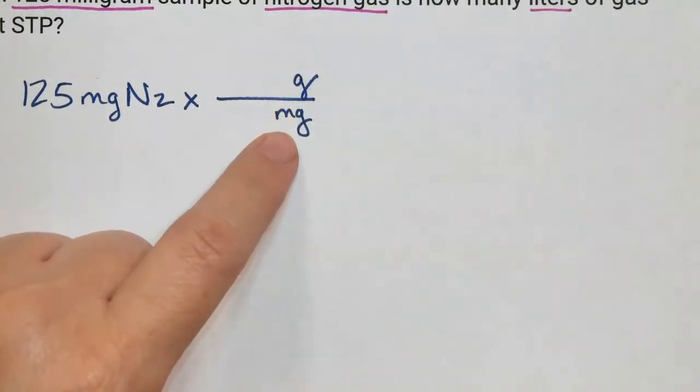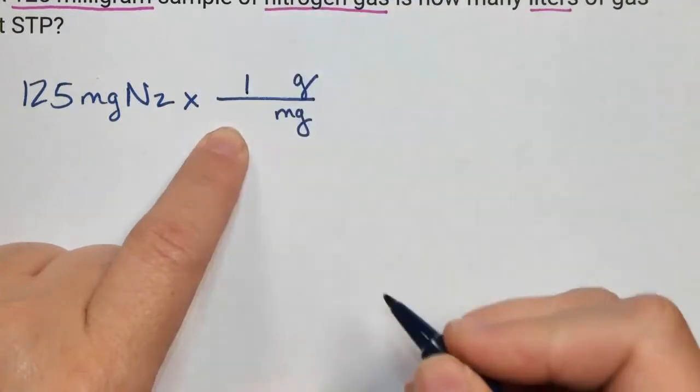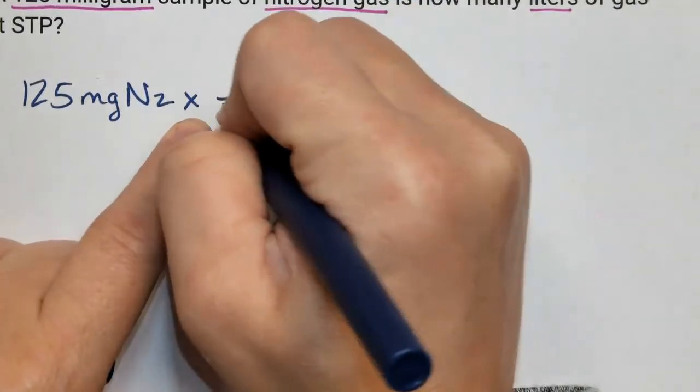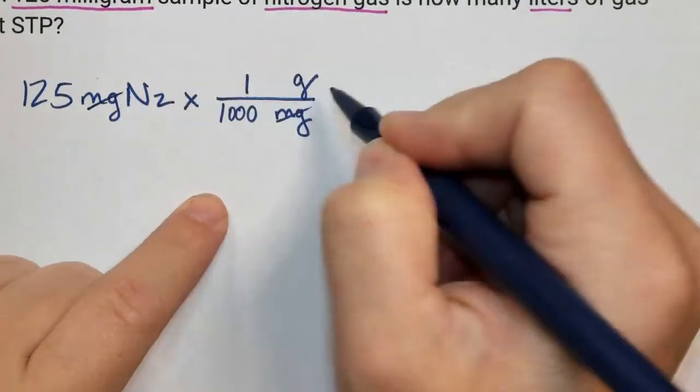So we want to go from milligram to gram. Which one is bigger? The grams is bigger, and it's equal to 1,000 milligrams. Milligrams now have canceled.